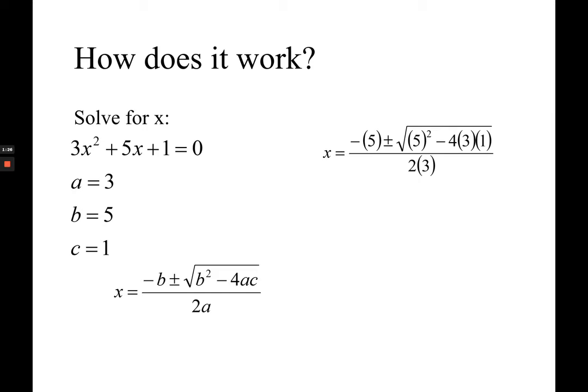Then simplify your expression. 5 squared is 25. 4 times 3 is 12. 2 times 3 is 6. And then 25 minus 12 is 13. Since 13 is not a perfect square, it does not simplify. This result is actually considered as final answer.